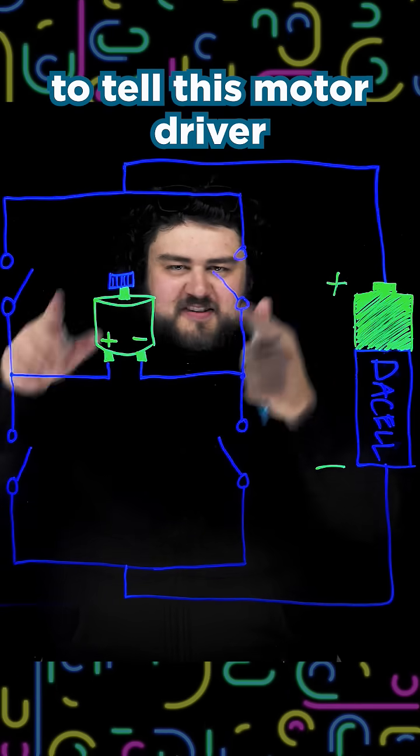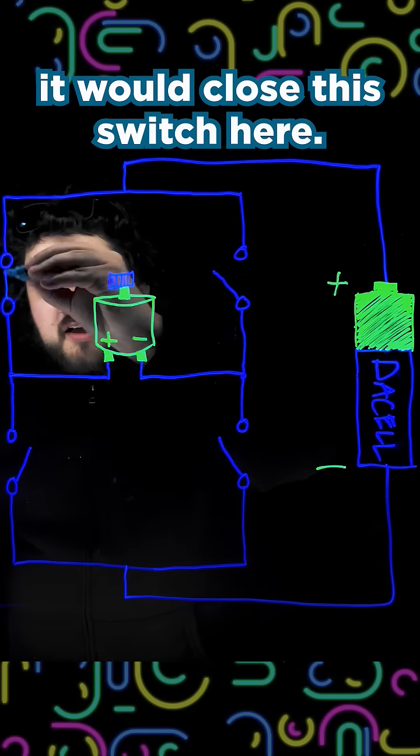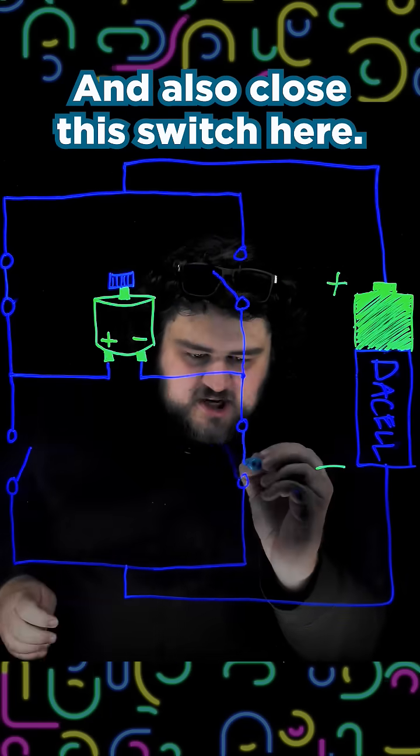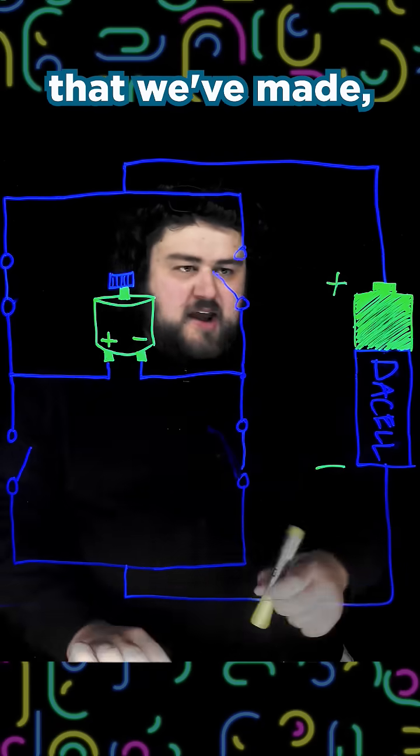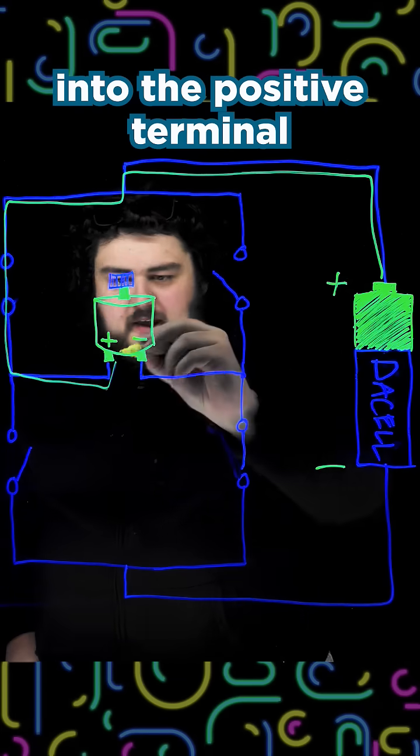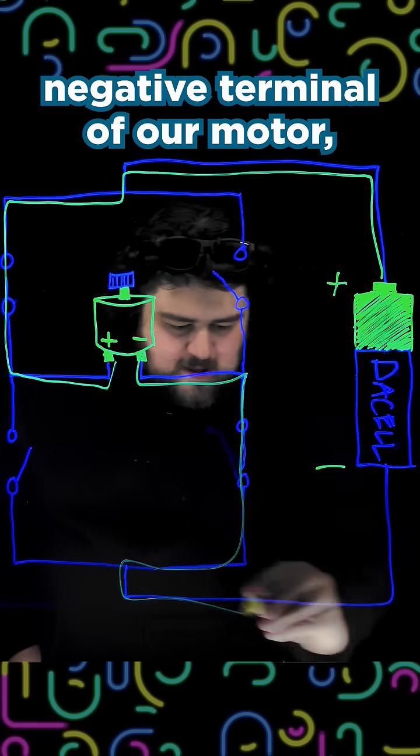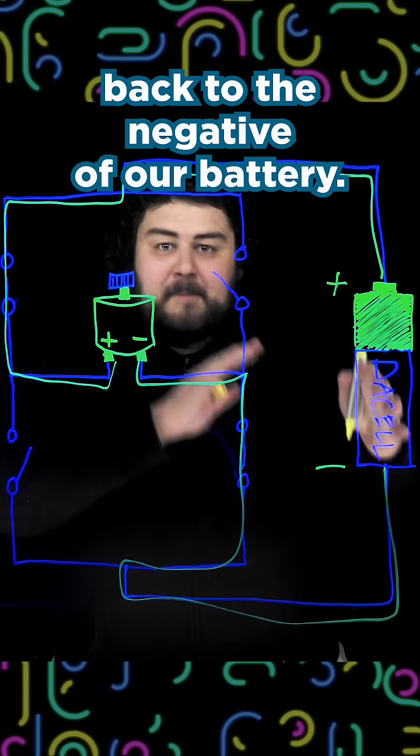If you programmed your microcontroller to tell this motor driver to drive the motor forward, it would close this switch here and also close this switch here. If we look at the connection we've made, we've now made a path from the positive terminal of our battery all the way around into the positive terminal of our motor, back through the negative terminal of our motor, back to the negative of our battery.